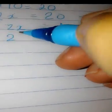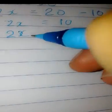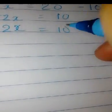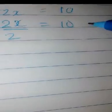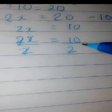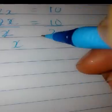To get x by itself, we divide both sides by 2. We cross these out and this becomes x equals 5. That is the solution.